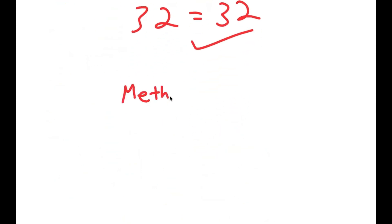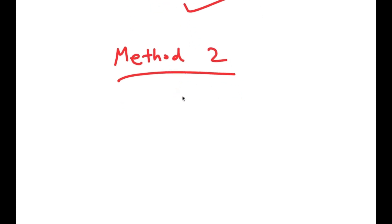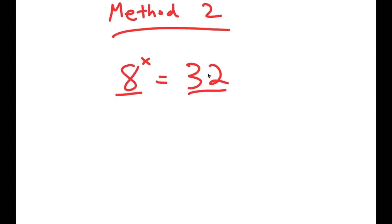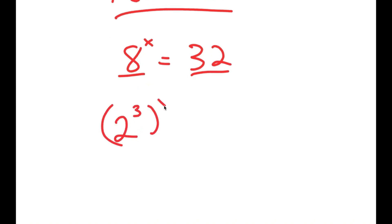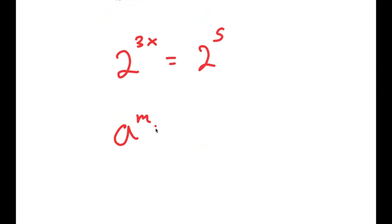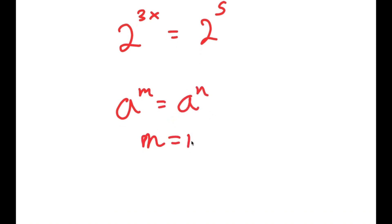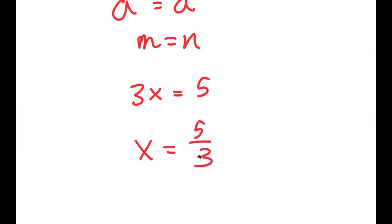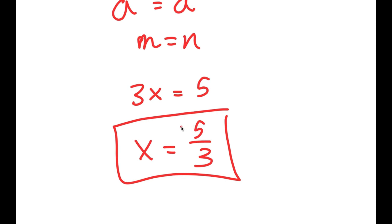I also have a second method of solving this problem. For the second method, we have the same equation 8 to the power of x equals 32, and this is a simpler method. I'm going to rewrite both numbers with the same base: 8 as 2 to the power of 3, and 32 as 2 to the power of 5. So 2 to the power of 3 to the power of x equals 2 to the power of 3x, which equals 2 to the power of 5. Because these two have the same bases, we know 3x equals 5, and therefore x equals 5 over 3.